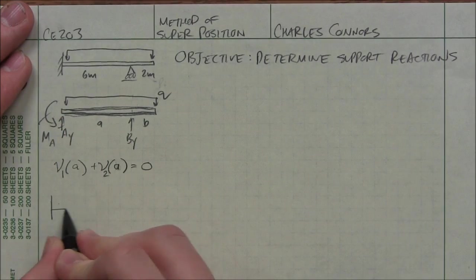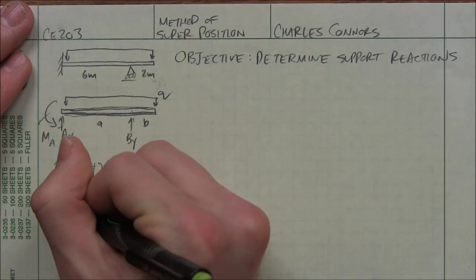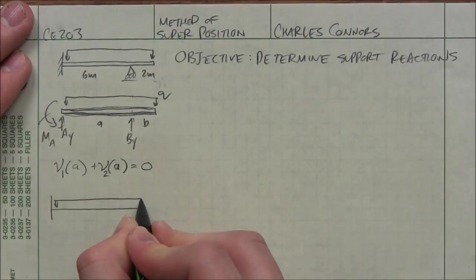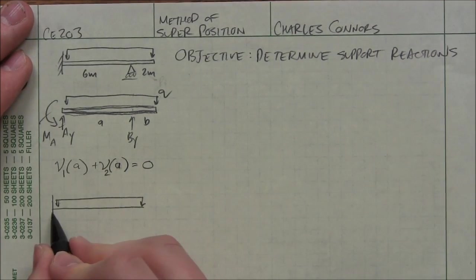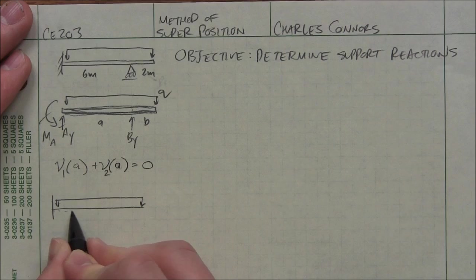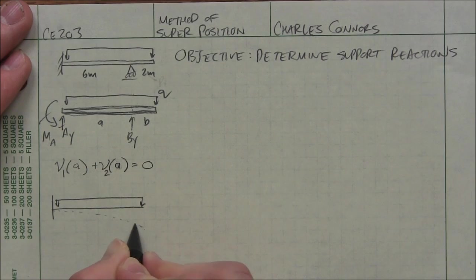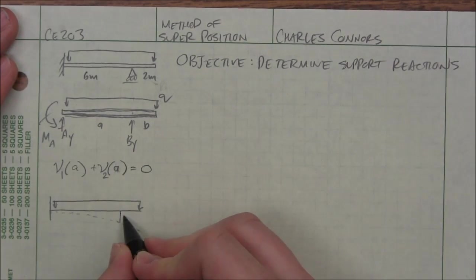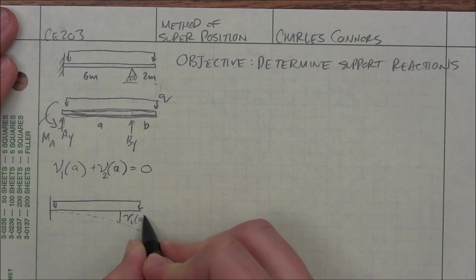So let's see, I have my first cantilever beam with just my distributed load and that's going to end up looking something like this for deflected shape. So this is the deflection that we're calling V1 at A.